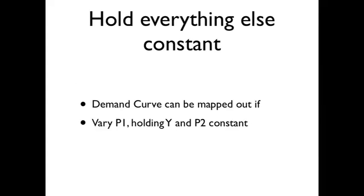And we can get a demand curve by holding everything else constant. If we vary the price of good 1, holding income and price 2 constant. A lot of things in economics are holding everything else constant, just varying one thing.